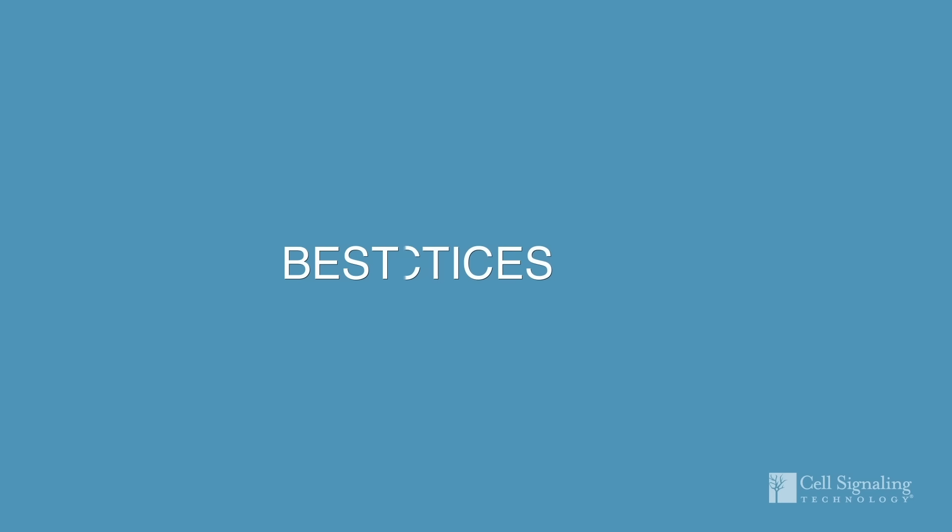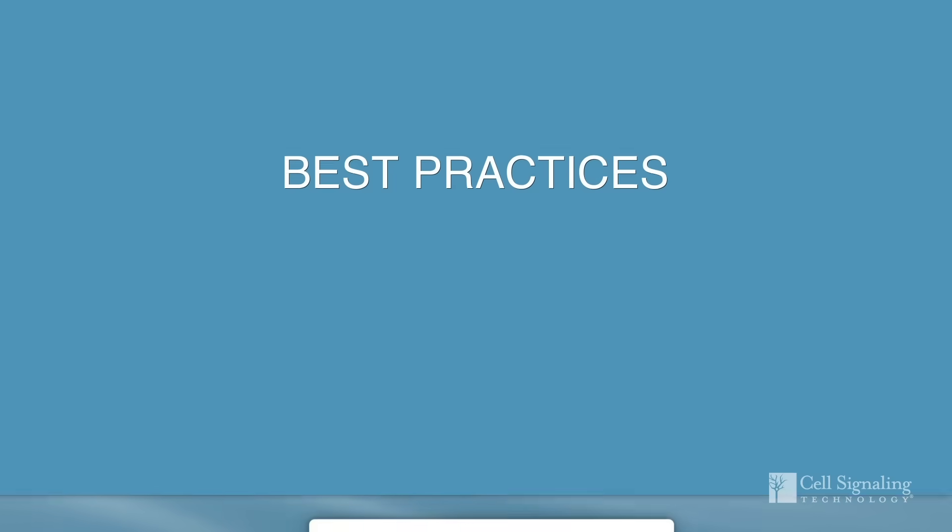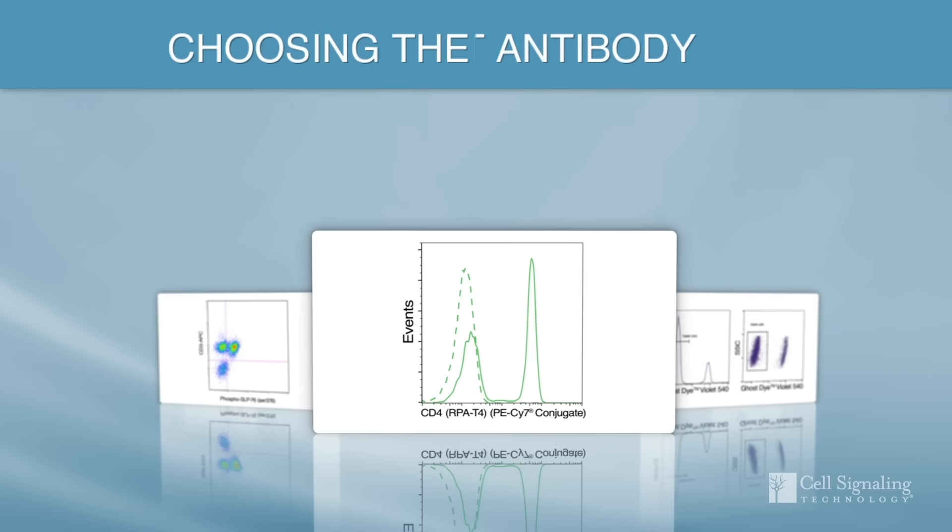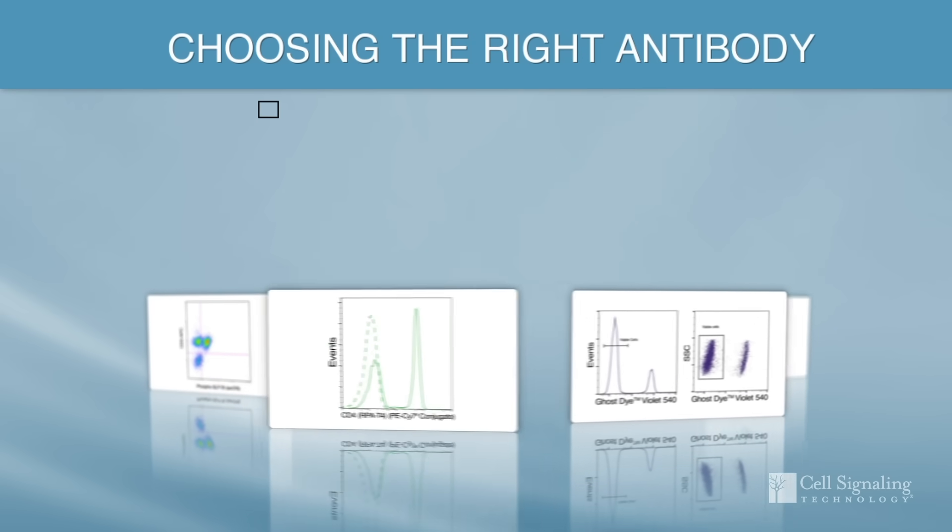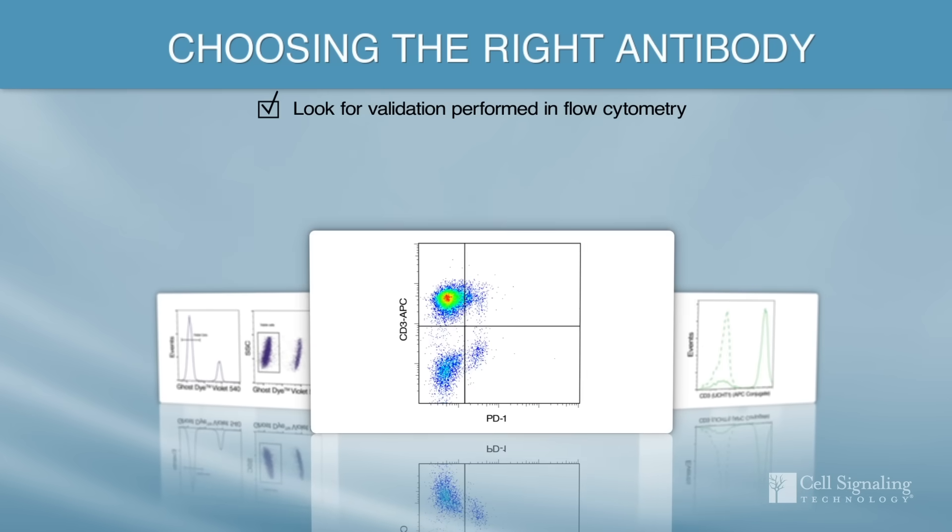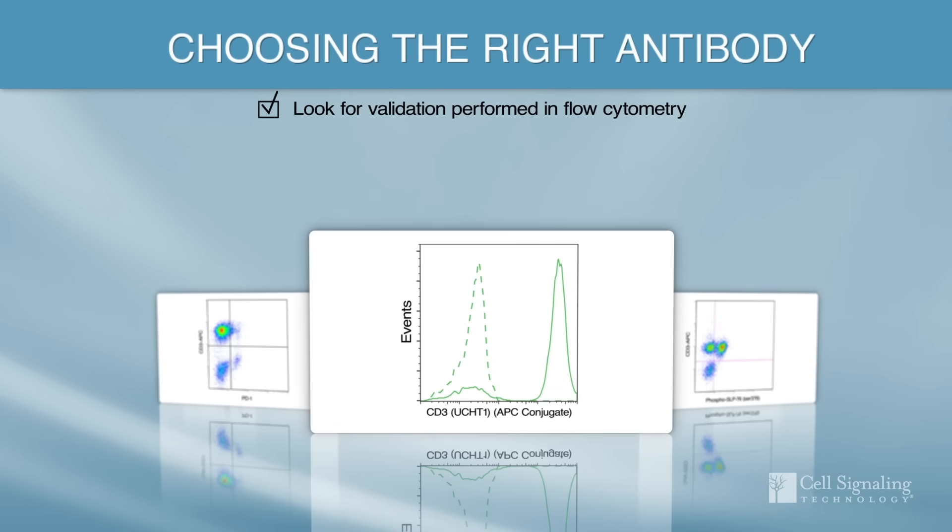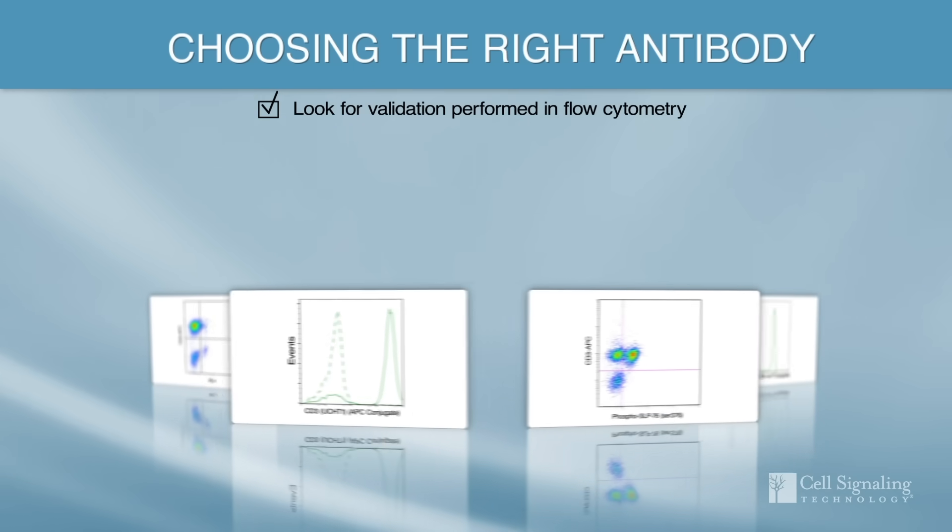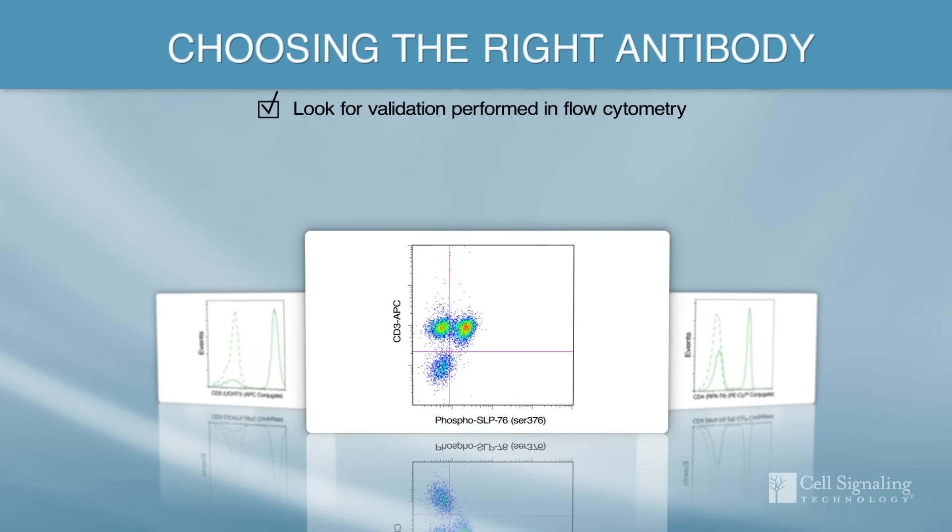Here are some best practices to ensure your flow cytometry results are reliable and reproducible. When building your panel make sure to select antibodies or antibody conjugates that have been validated in flow cytometry. Performance in other applications does not tell you how that antibody will perform in flow.